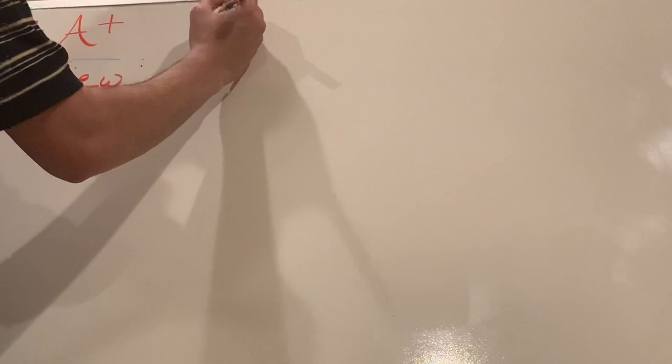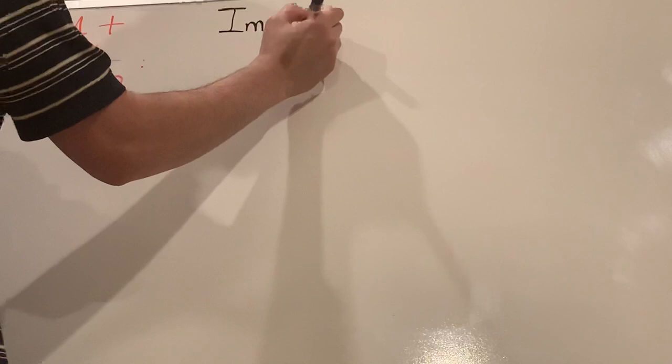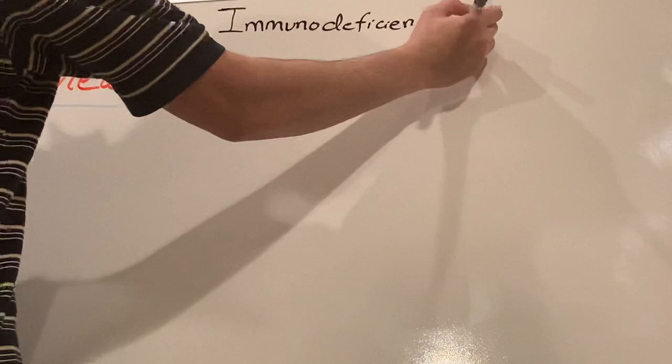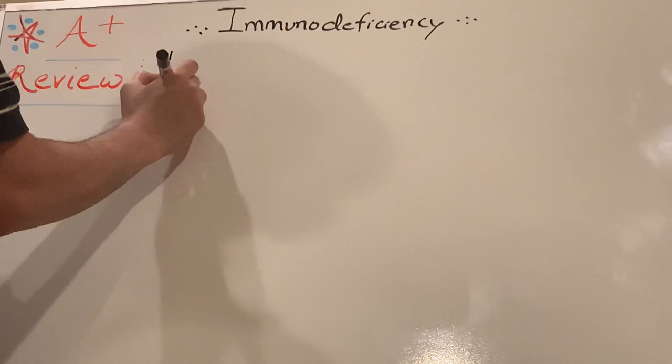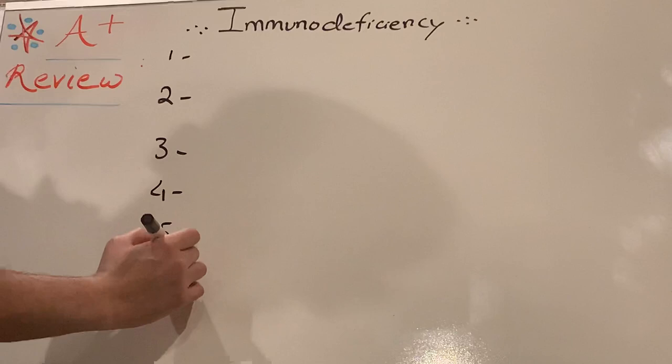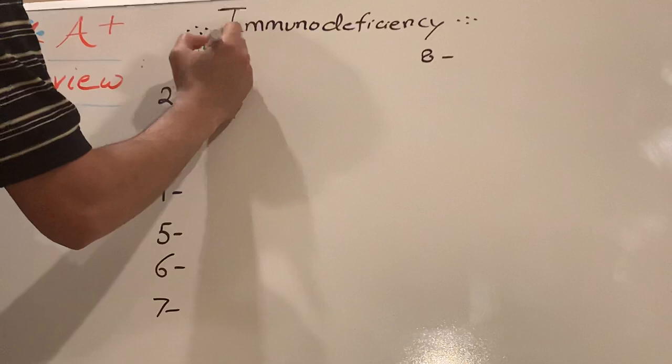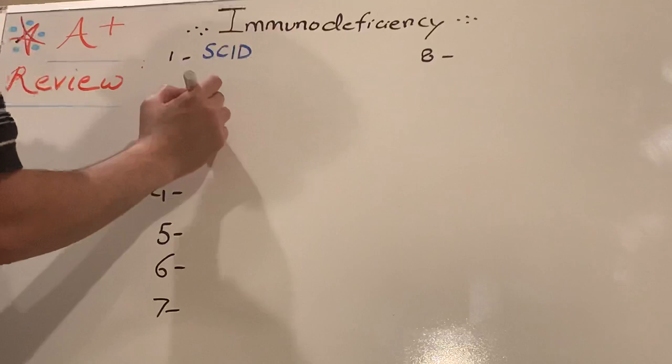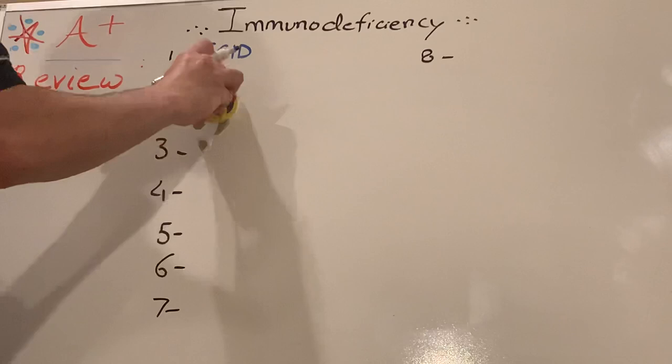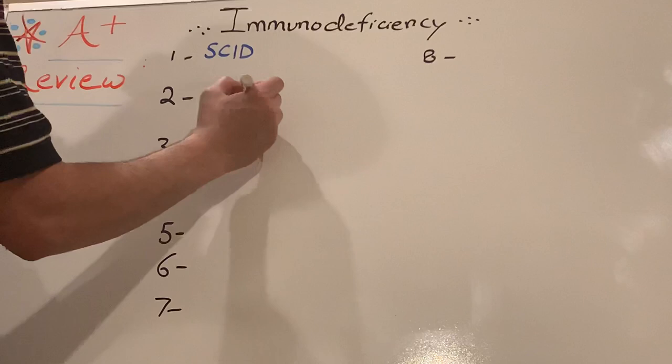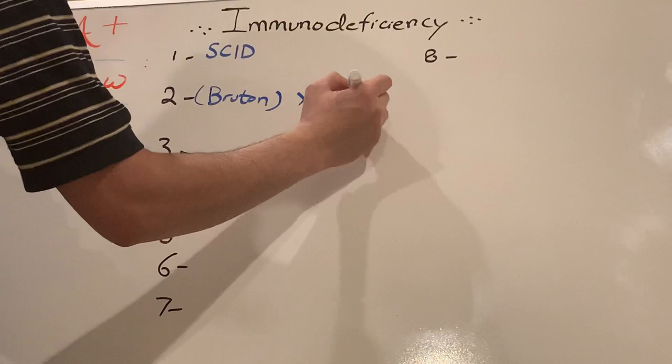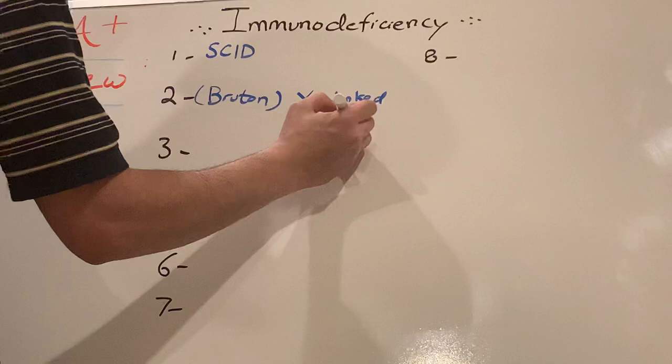Alright guys, so we're going to talk about immunodeficiency - all the disorders which are important for the exam. So one, two, three, four, five, six, seven. Let's write it here. First is SCID, Severe Combined Immunodeficiency. Second is Bruton - it's better to write Bruton first - Bruton X-linked agammaglobulinemia.